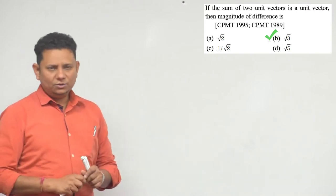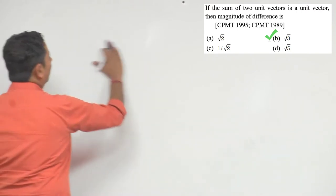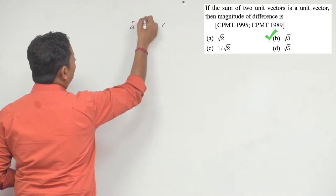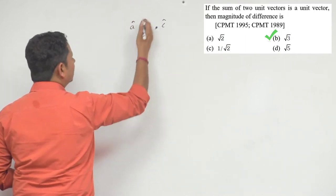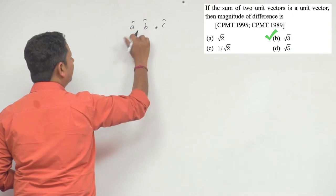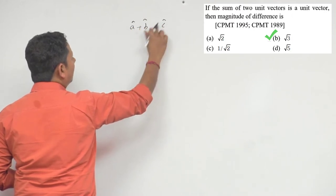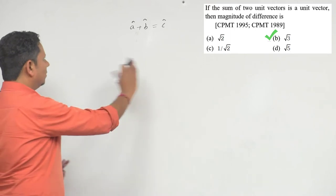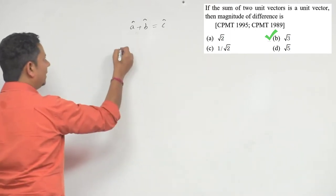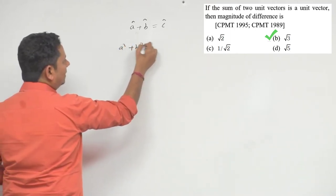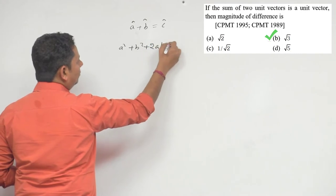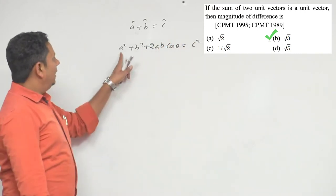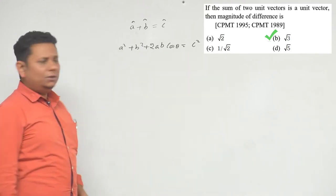Since the resultant of two unit vectors is also a unit vector, let us say vector a and vector b are the two unit vectors, and their sum gives vector c. So a + b = c vector, and c vector is also a unit vector. Now we can write: a² + b² + 2ab cosθ = c².